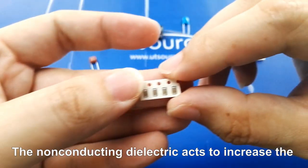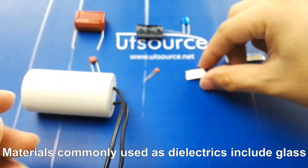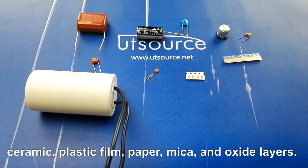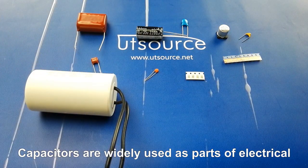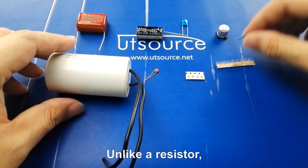The non-conducting dielectric acts to increase the capacitor's charge capacity. Materials commonly used as dielectrics include glass, ceramic, plastic film, paper, mica, and oxide layers. Capacitors are widely used as parts of electrical circuits in many common electrical devices.